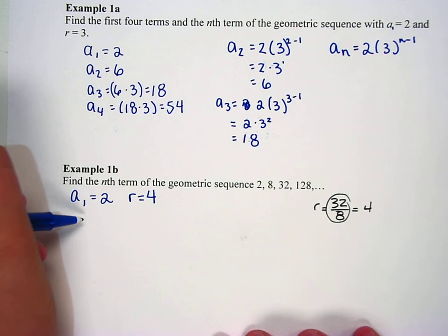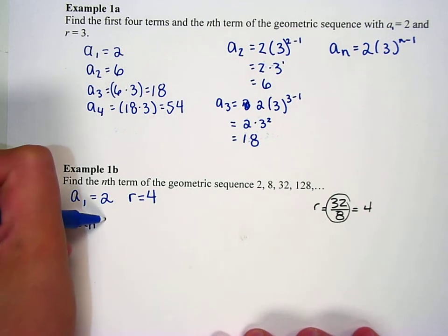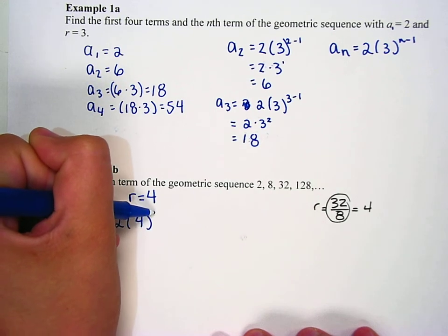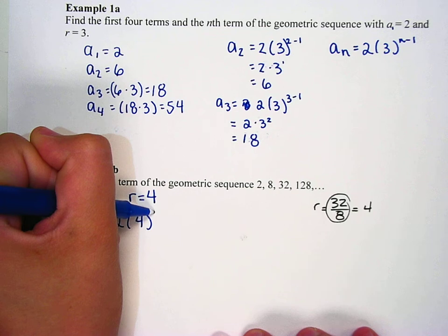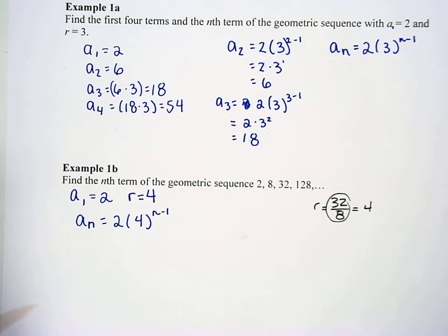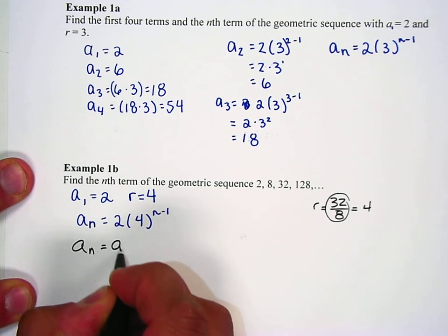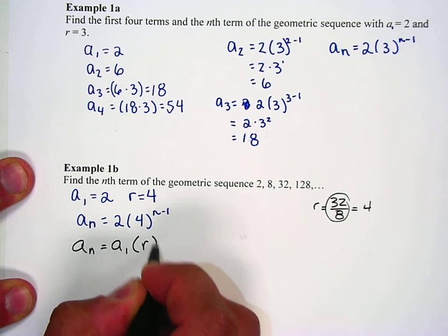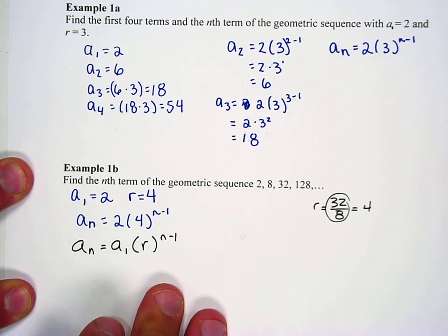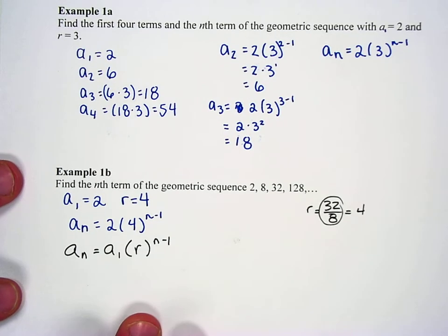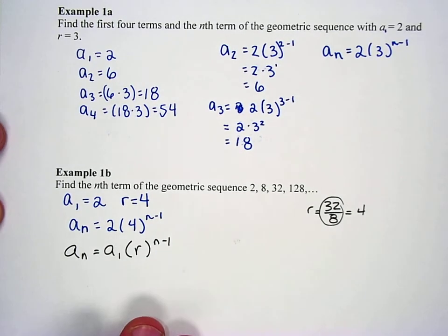Alright, so now we want to find the nth term. Well, if I know the first term is 2 and the ratio is 4, how are you going to find a sub n, just writing a general formula? Yep. So we're going to use a sub n equals 2 times 4 to the n minus 1, because we don't know what n is. And she got that by writing or filling in a sub n equals a sub 1 times r to the n minus 1, which is from our formula right here, which is very important that we know that.